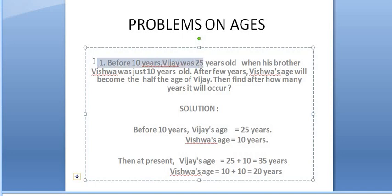Before 10 years, Vijay was 25 years old when his brother Vishwa was just 10 years old. After few years, Vishwa's age will become half the age of Vijay. Find after how many years it will occur.